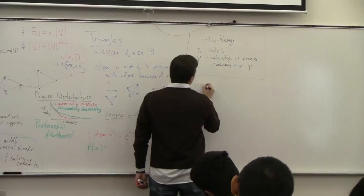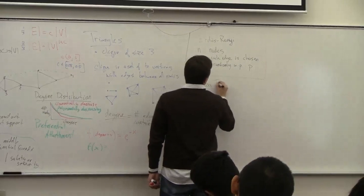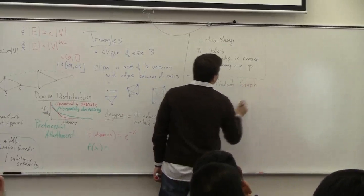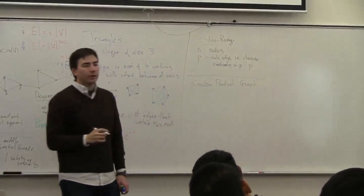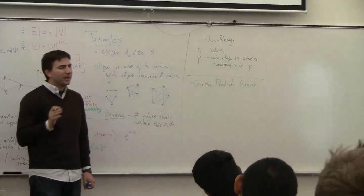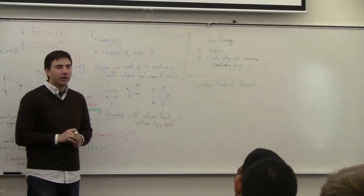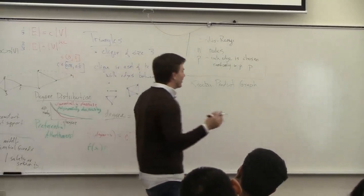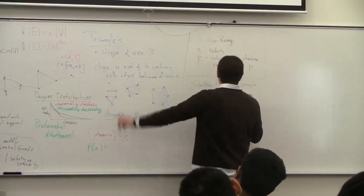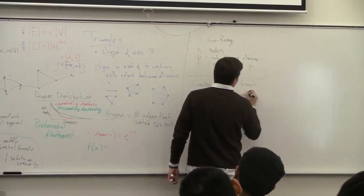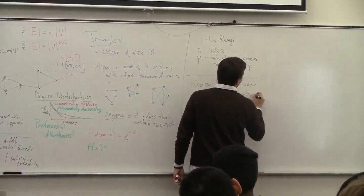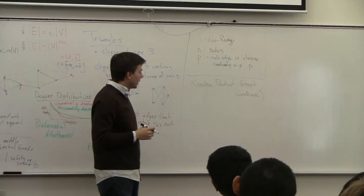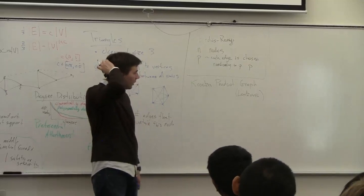But preferential attachment doesn't quite capture a lot of properties we've seen in real graphs. The most popular model now is called the Kronecker product model, developed by Leskovec. There are some people who note some issues with it, but it satisfies all these properties.